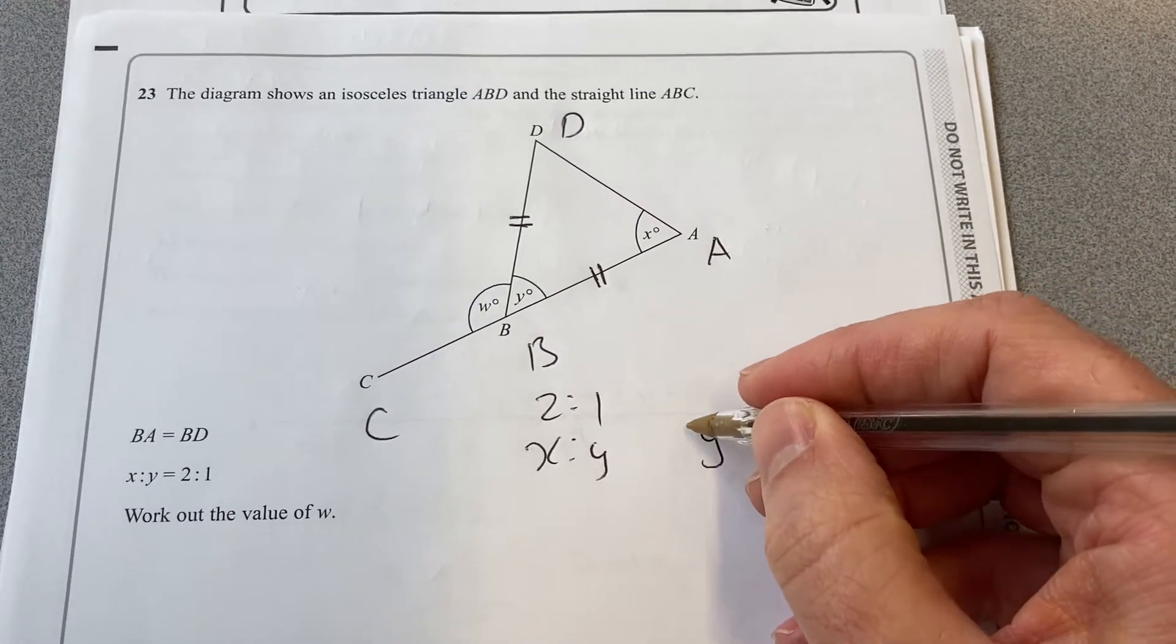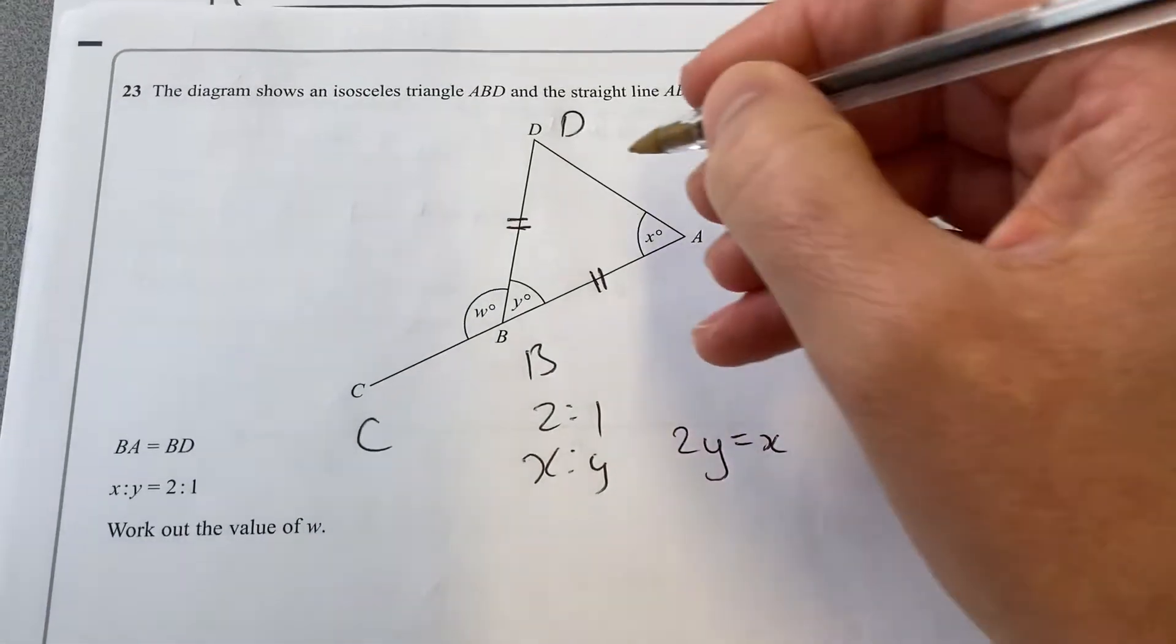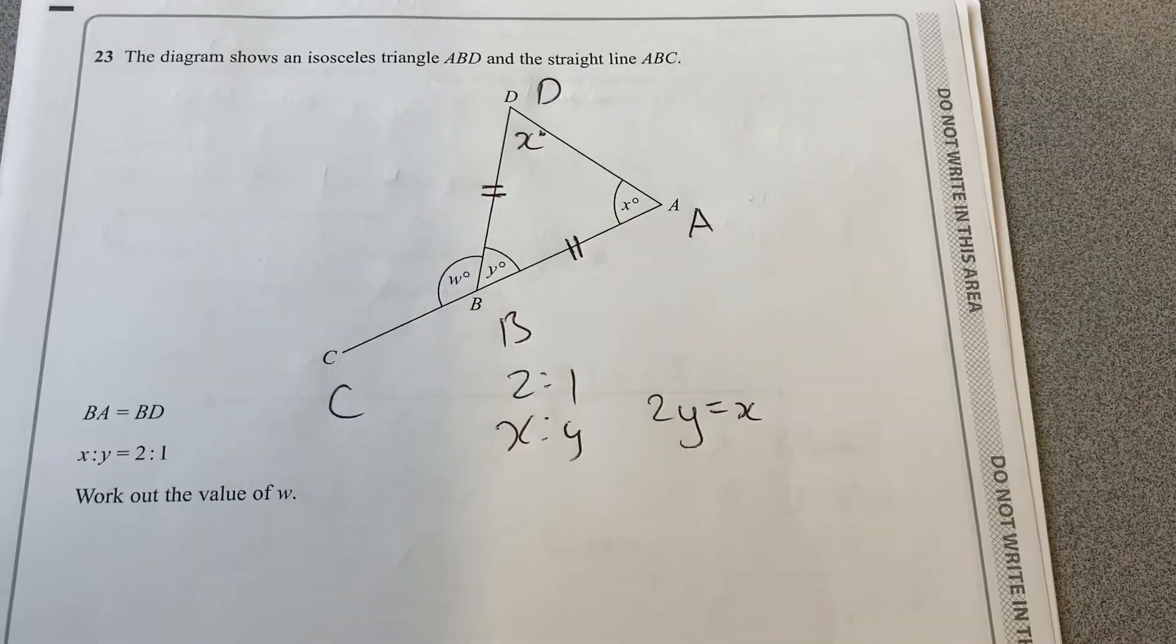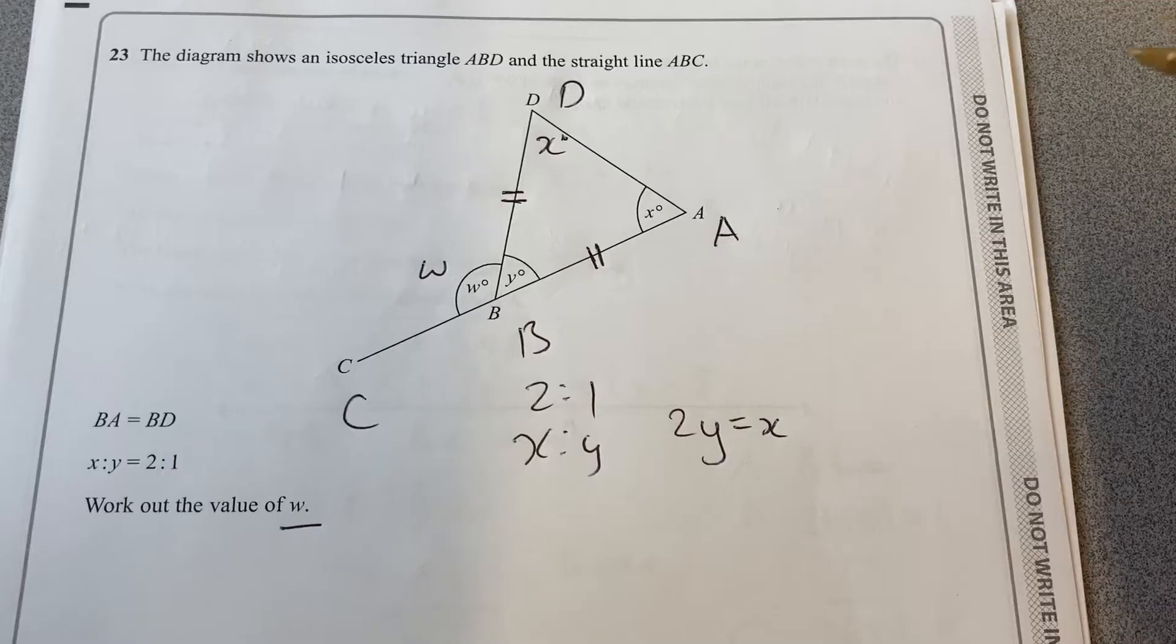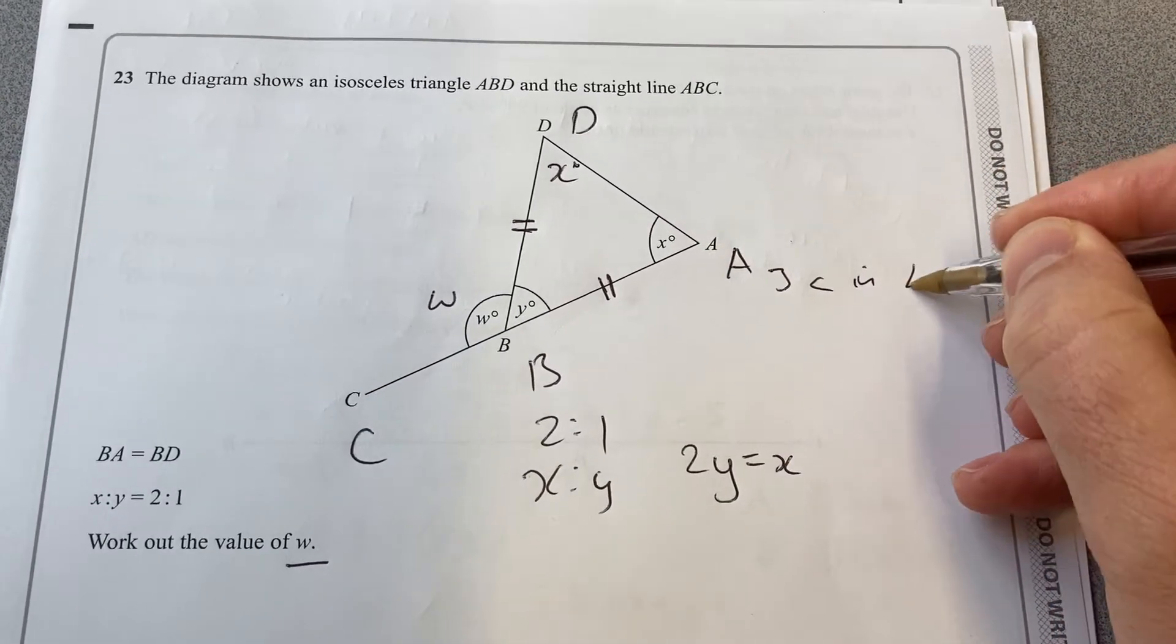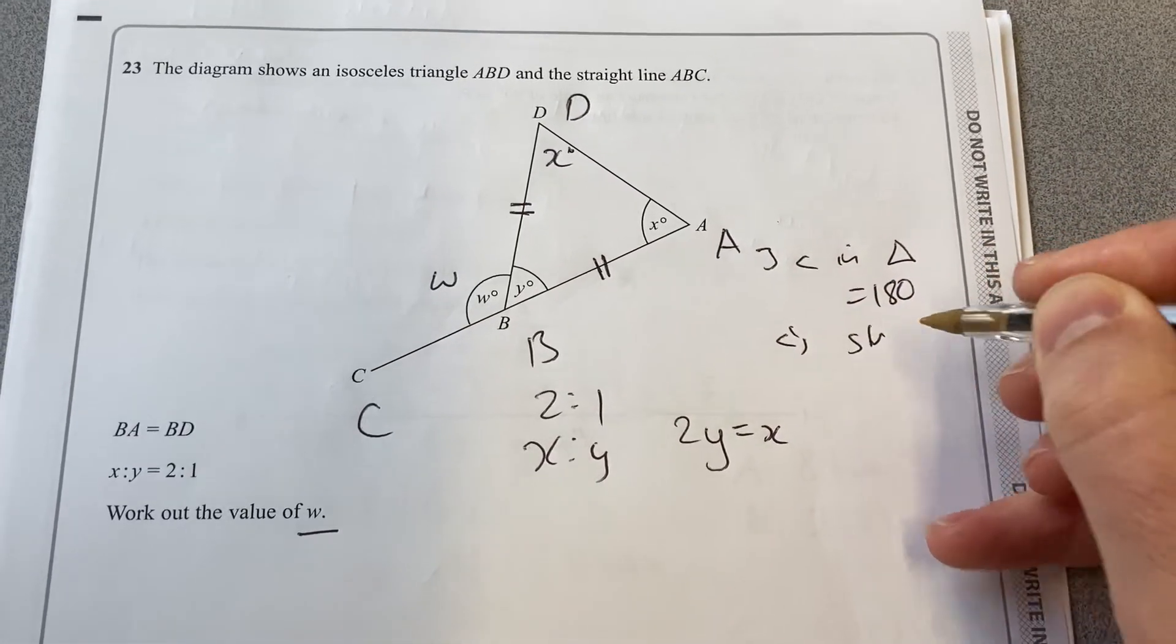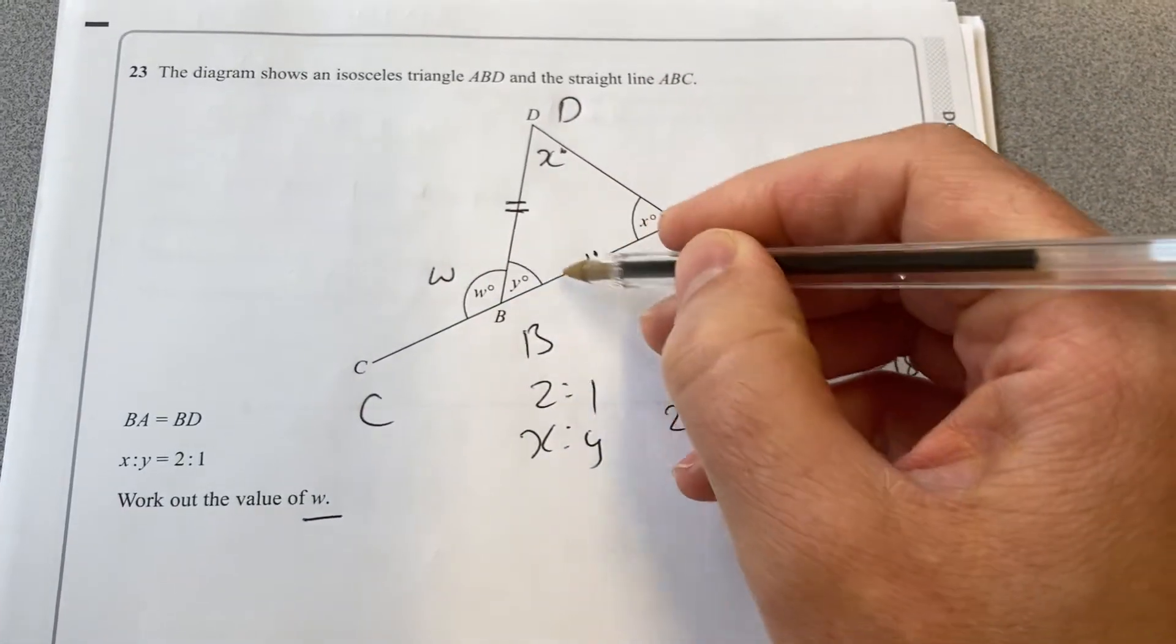So I'll say 2Y equals X. I know that X is also there because it's isosceles, and now we're going to work out the value of W, which is here. We don't have any information in terms of numbers yet, but we know that three angles in a triangle add up to 180, angles on a straight line add up to 180.